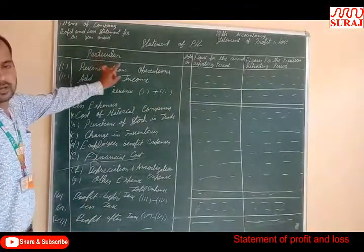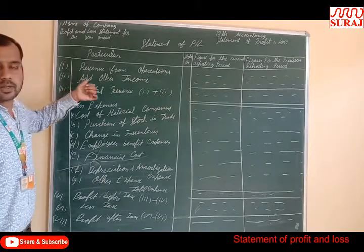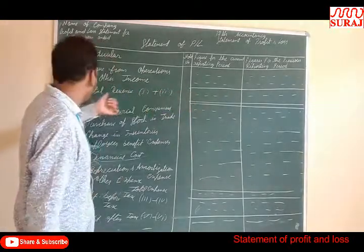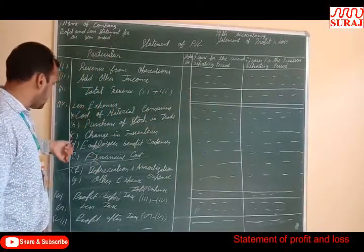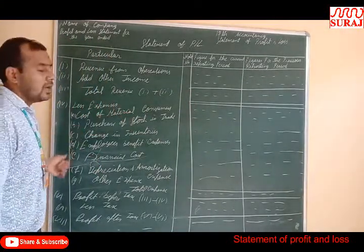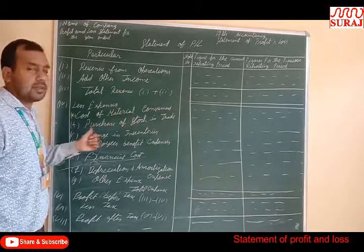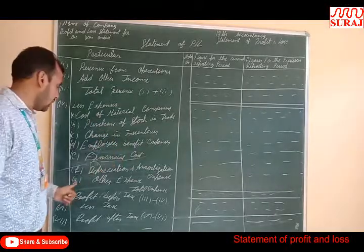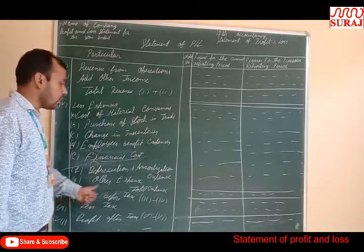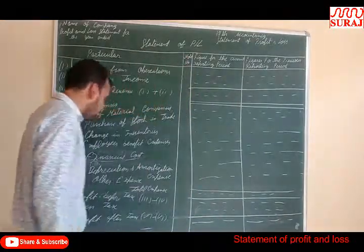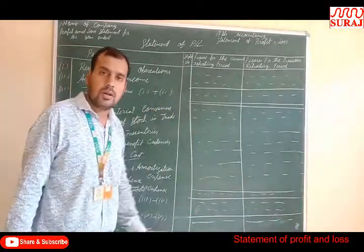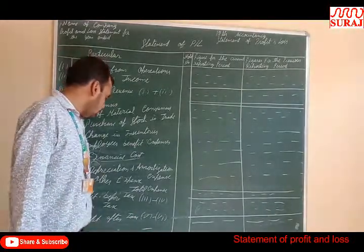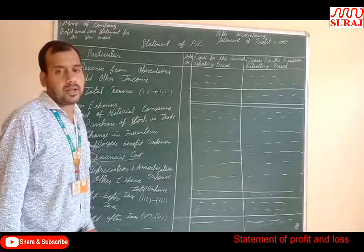Dear students, to summarize: Part 1 is Revenue from Operations. 2: Add Other Income. 3: Total Revenue, which is item 1 plus item 2. 4: Expenses categorized as cost of material consumption, purchase of stock in trade, change in inventory, employee benefit expense, financial cost, depreciation and amortization expense, other expenses, and total expenses. 5: Profit Before Tax, which is item 3 minus item 4. 6: Less Tax — the tax rate or amount is given. 7: Profit After Tax, which is item 5 minus item 6.